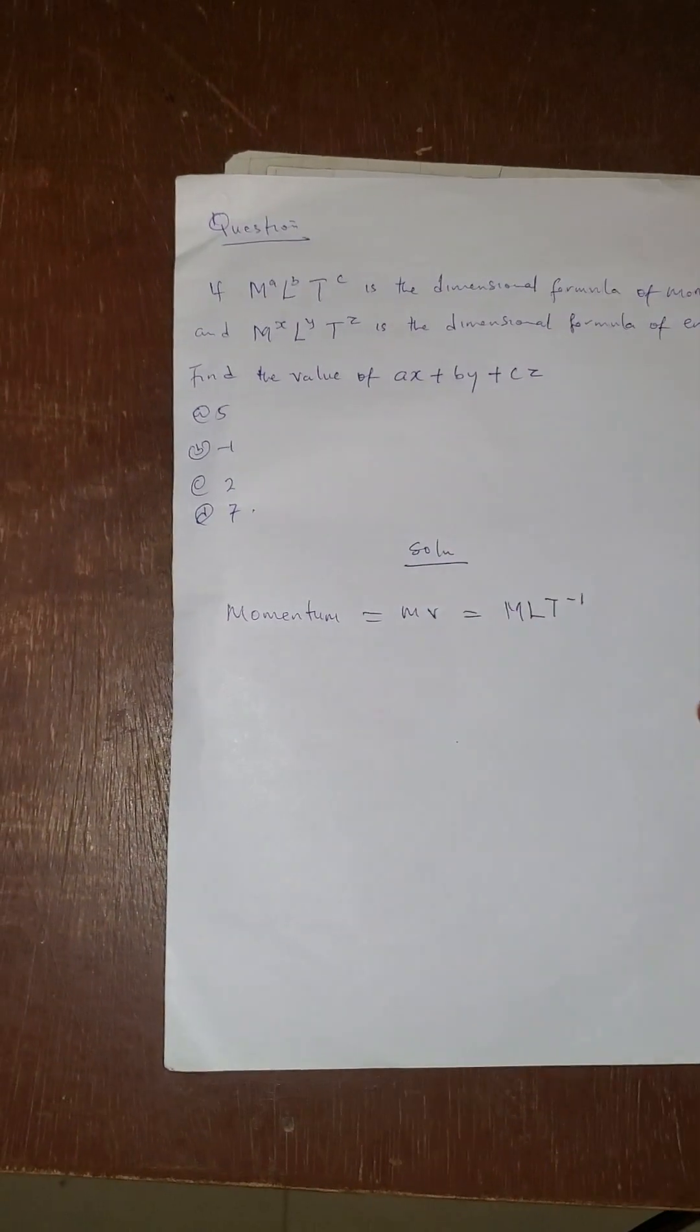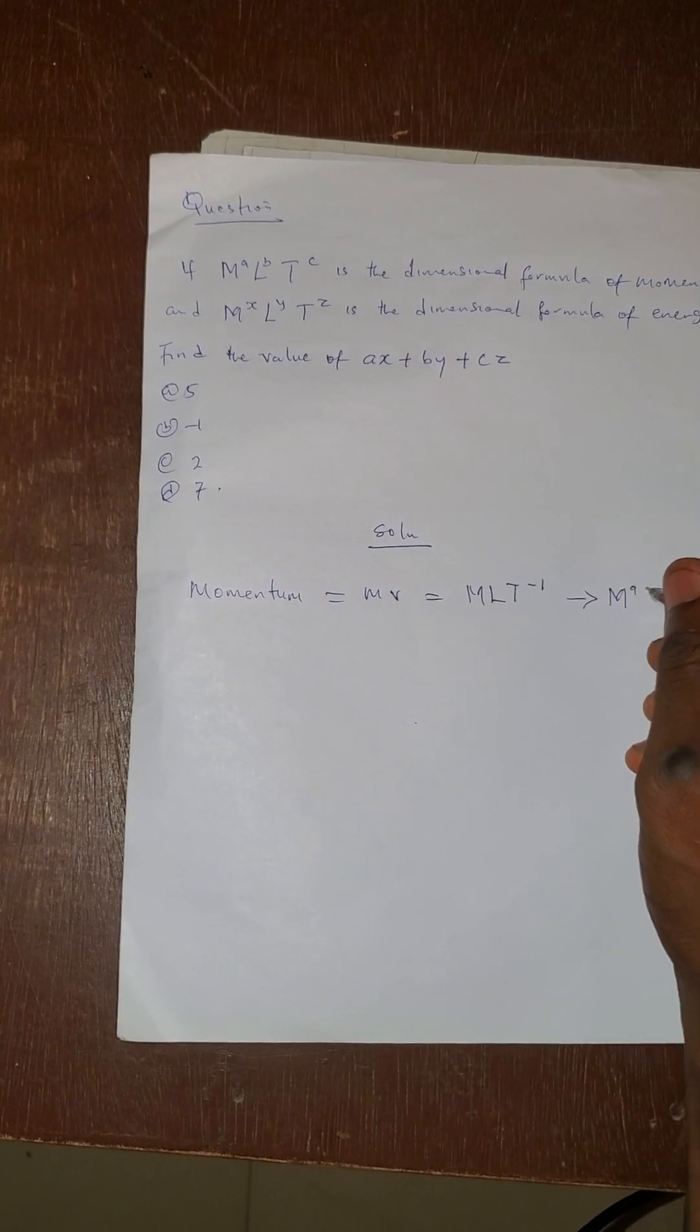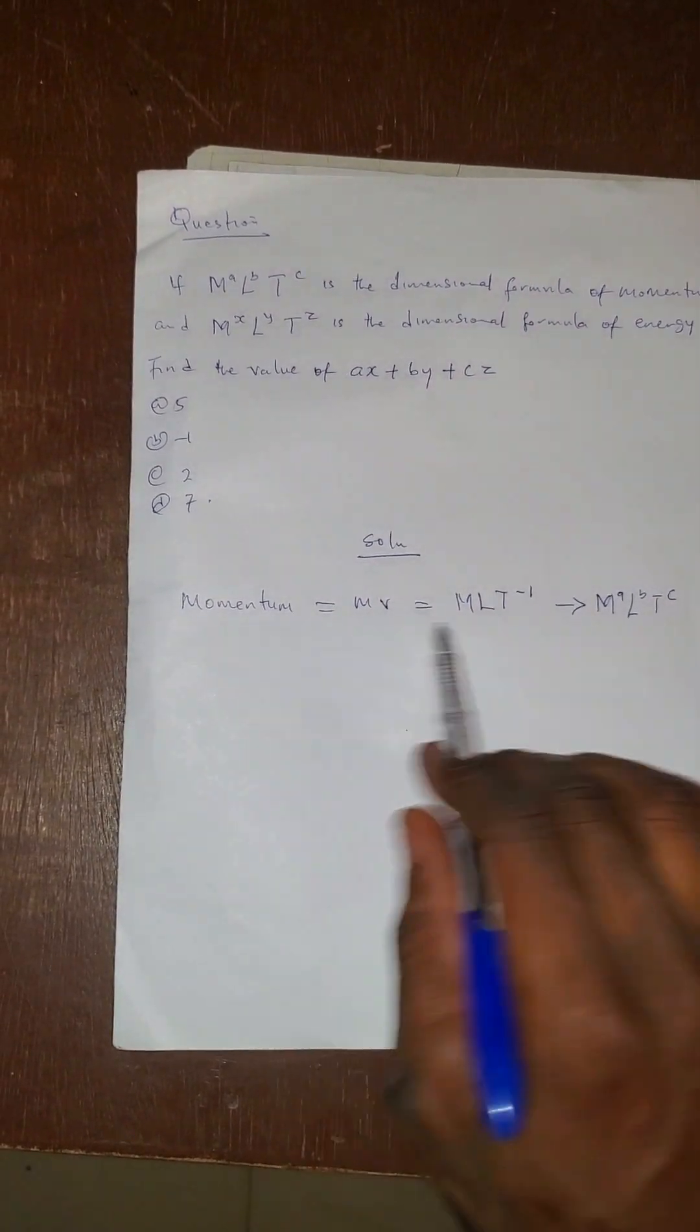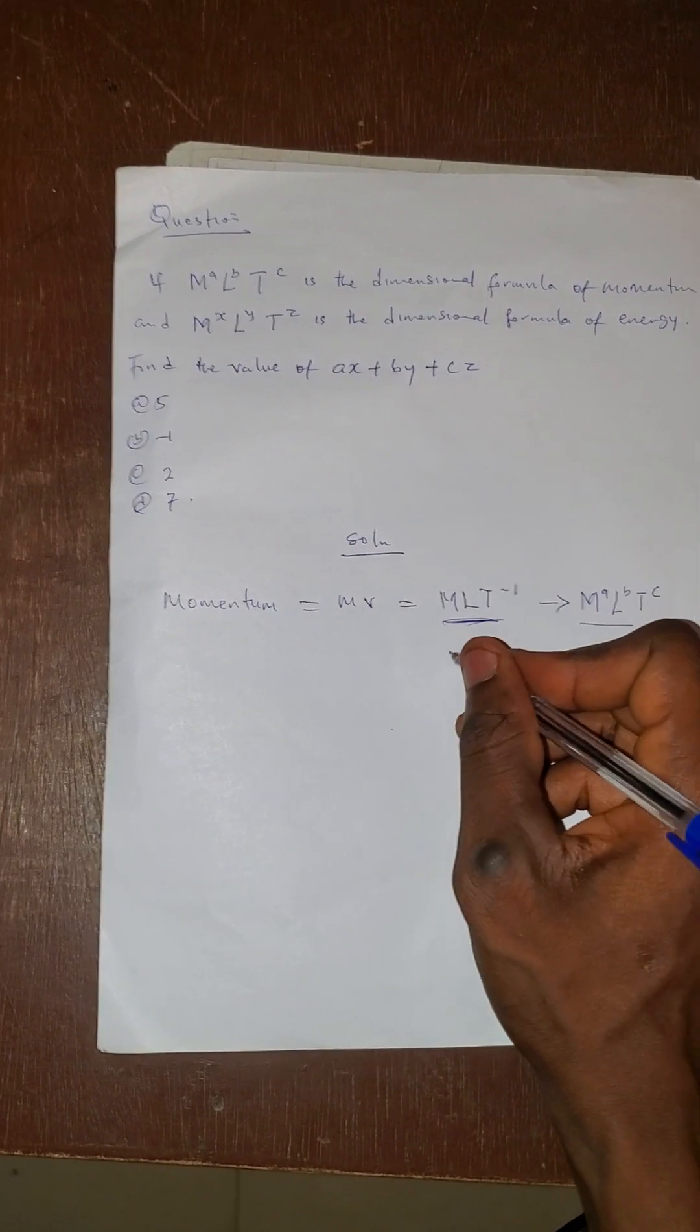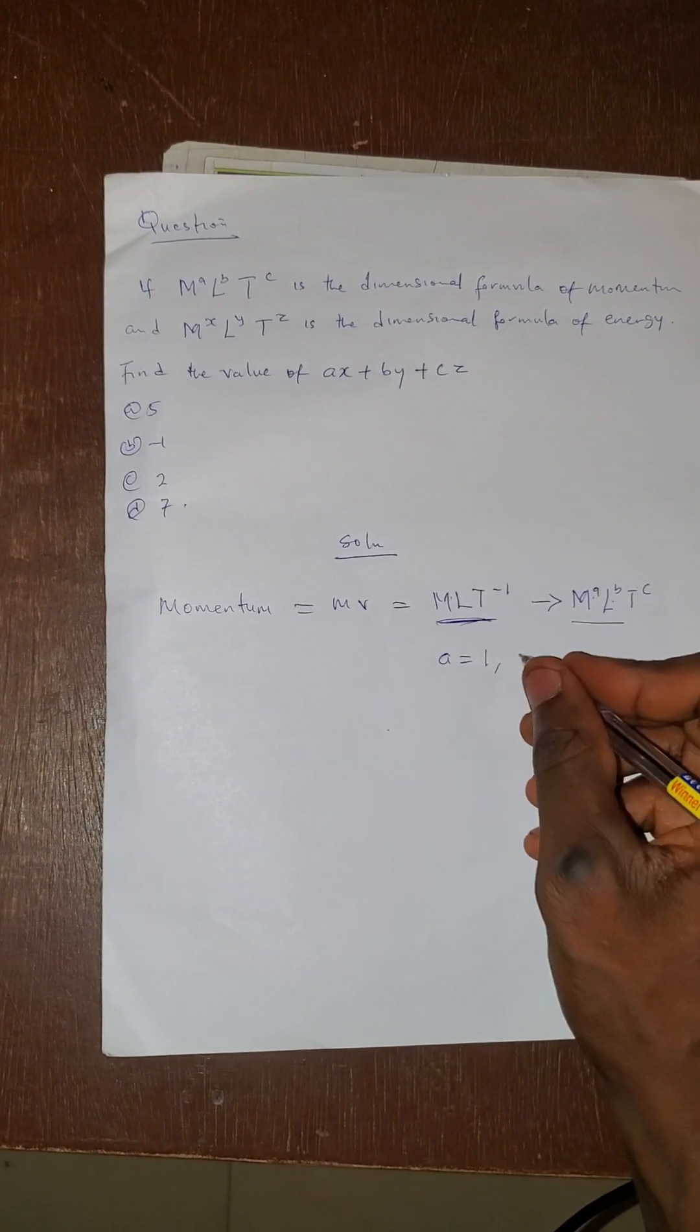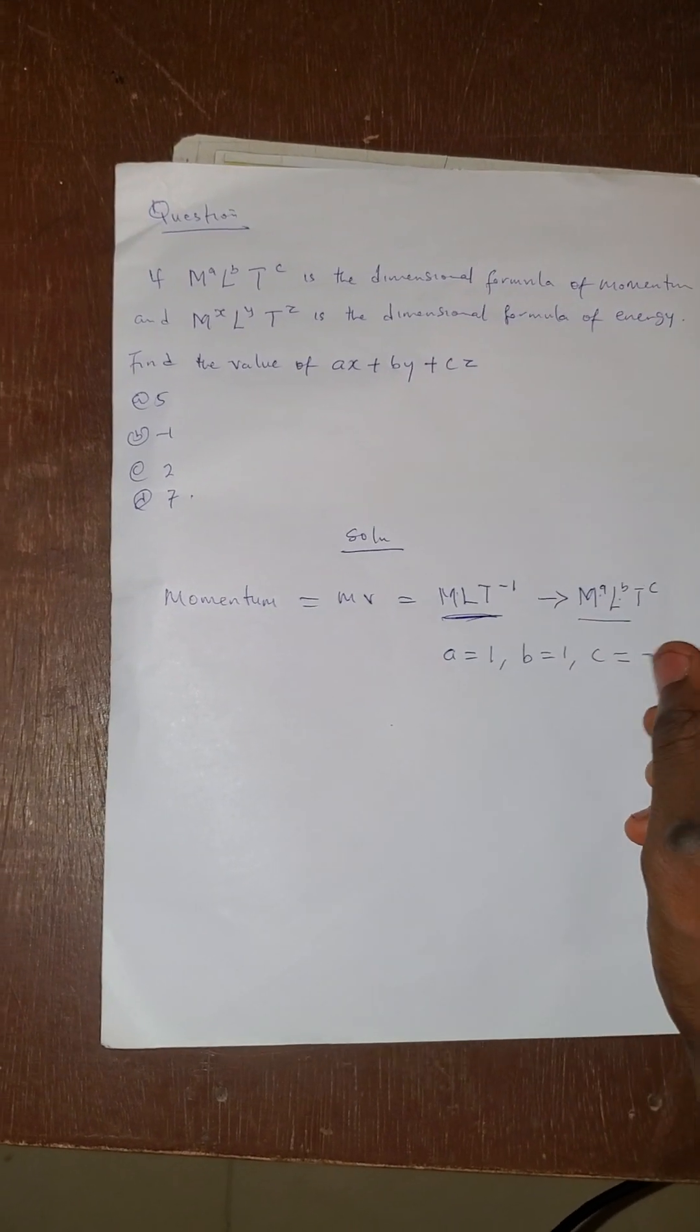We now said we should relate this with M raised by a, L raised by b, T raised by c. That is according to the first statement, this dimension of momentum. So that means our a here would be the power of M, so a is 1, and our b will be the power of L, so b is 1. Now c will be the power of T, which is minus 1.